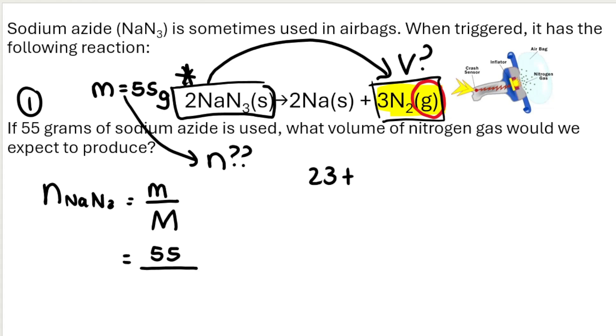The molar mass you get off the periodic table, you take sodium, which is 23, and we add nitrogen times 3. Nitrogen is 14 times 3. That gets me 65 grams per mole.